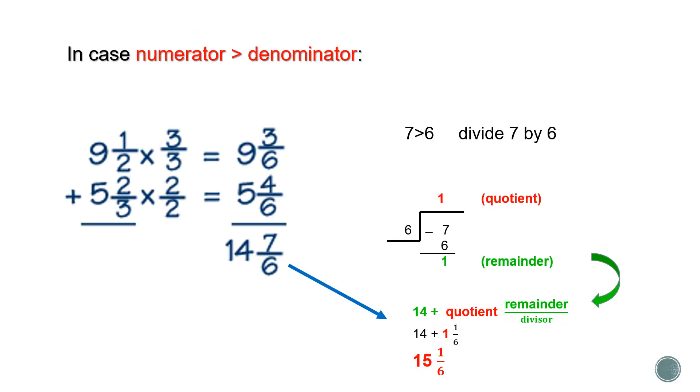Now, in case where the numerator is greater than the denominator, like the example you have below. I'm adding two mixed numbers, 9 and 1 over 2 plus 5 and 2 over 3. As we said earlier, we need to change the fractions into fractions with common denominator. So, we get 9 and 3 over 6 plus 5 and 4 over 6. So, the answer is 14 and 7 over 6.